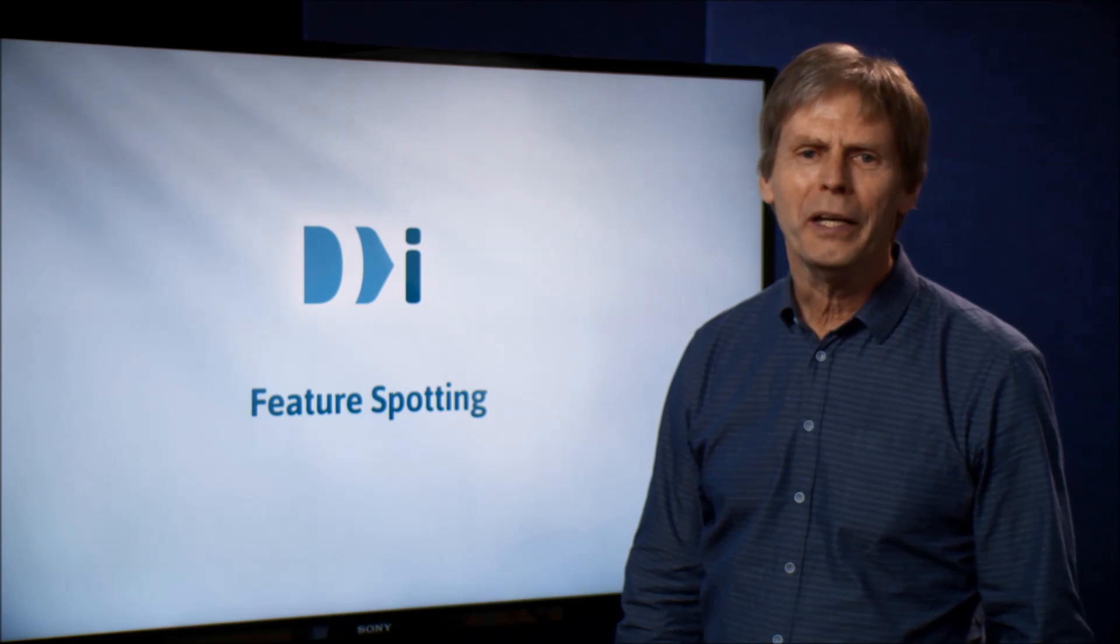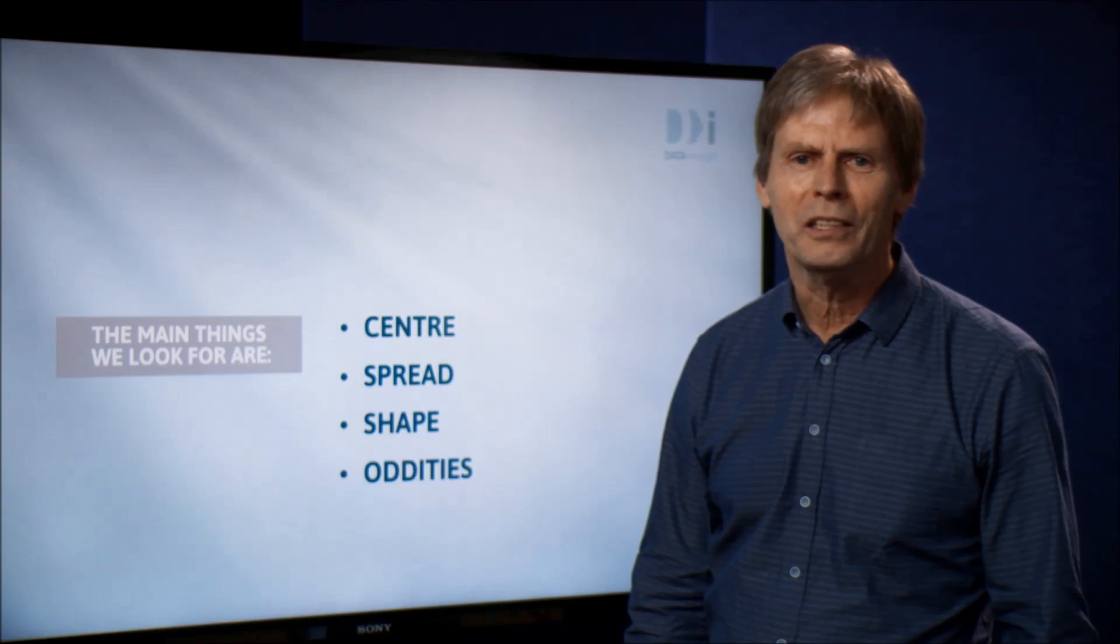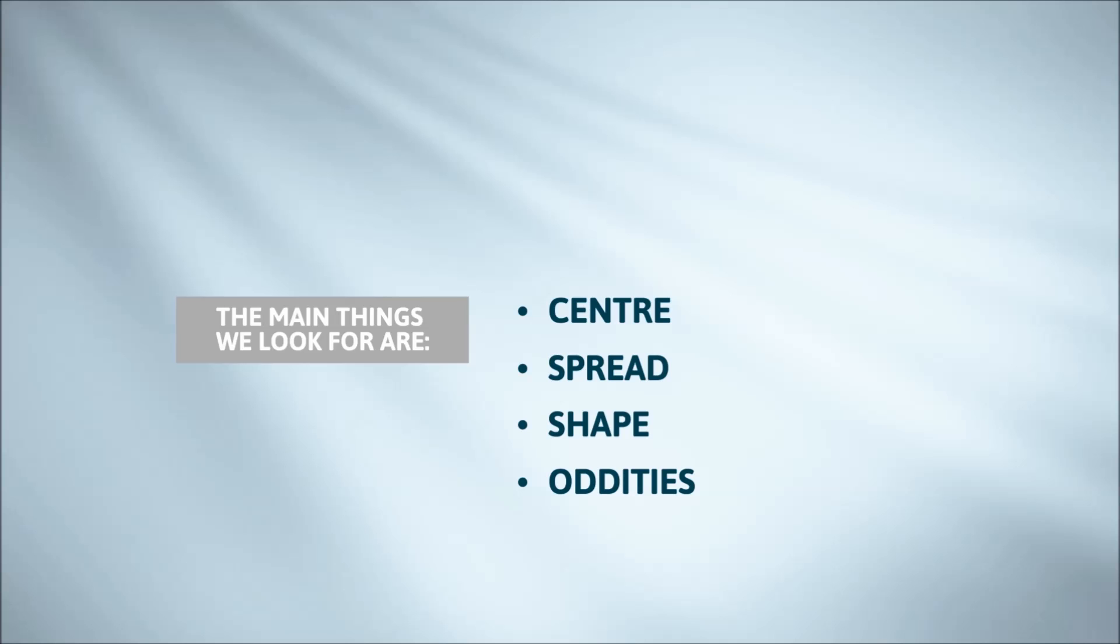Hello again. We're continuing our saga about numeric variables. Last time I told you that the main things we look for in dot plots are center, spread, shape, and oddities. In this video, I'll talk about the last three.